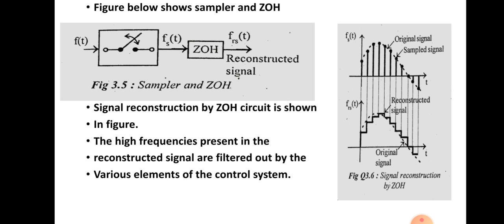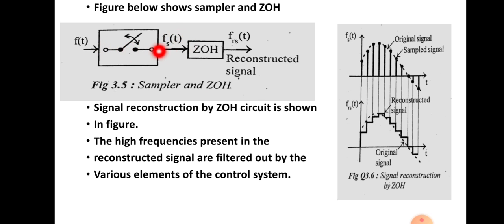Let us see here — you can see the sampler and the hold circuit, the zero-order hold circuit block diagram. First, the signals will be sampled by using a sampler. You will be getting a sampled version of the original continuous time signal, and that signal will be given to the zero-order hold circuit, and the signal will be reconstructed.